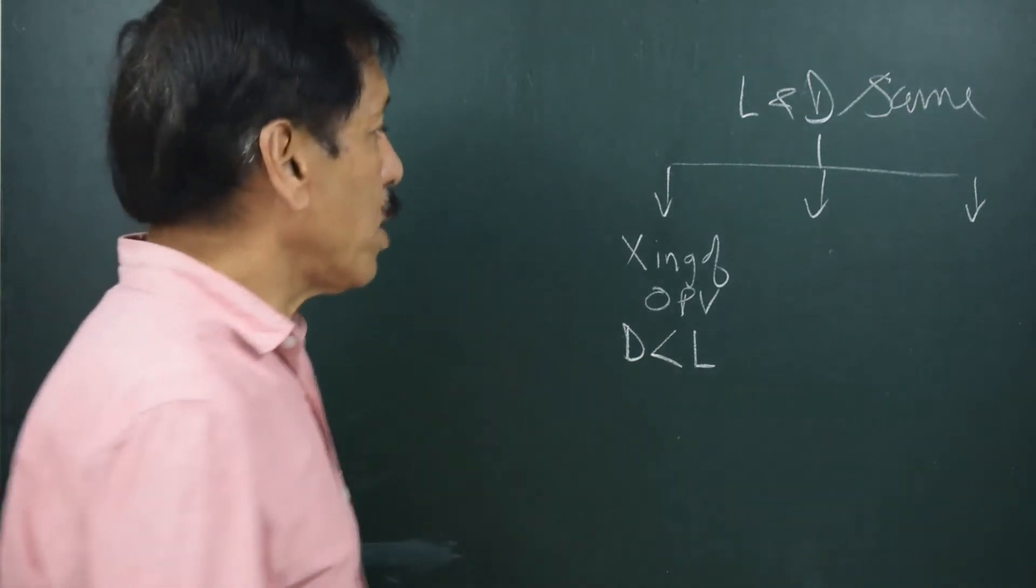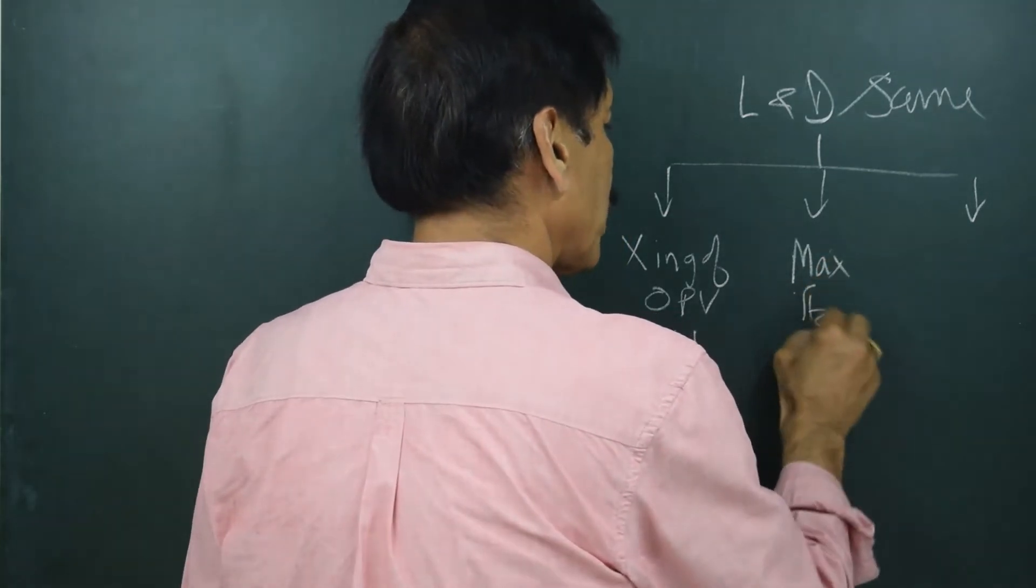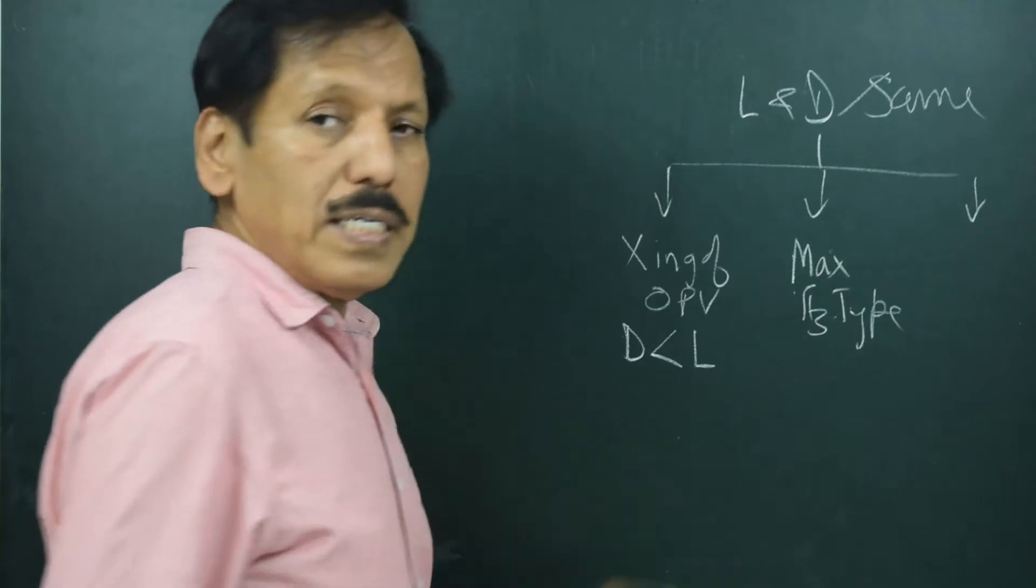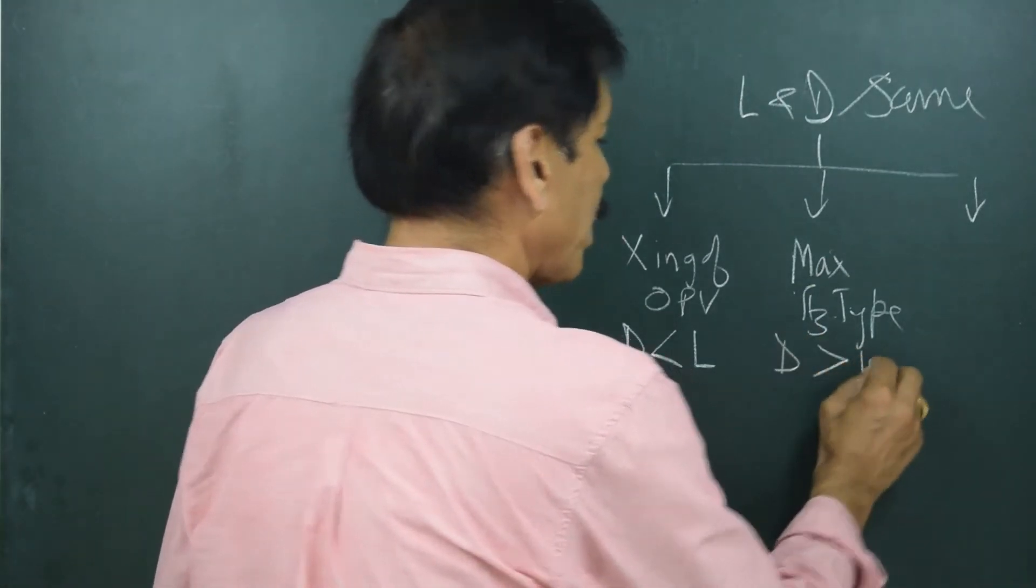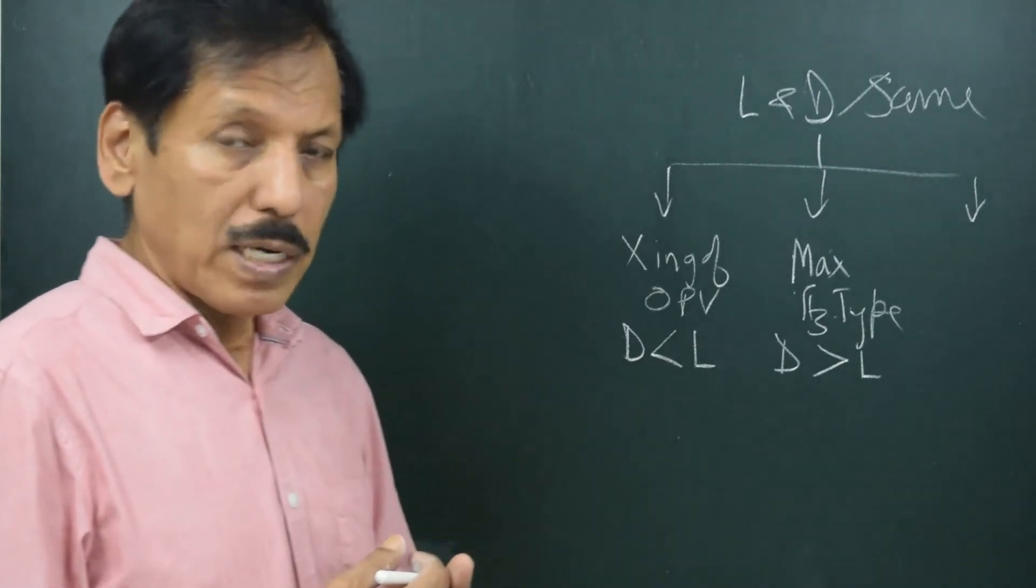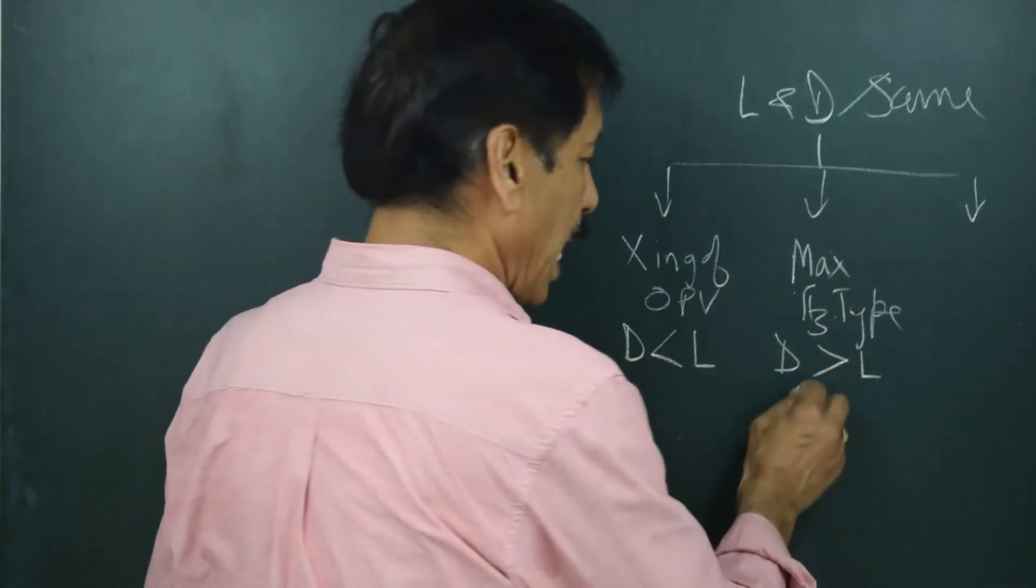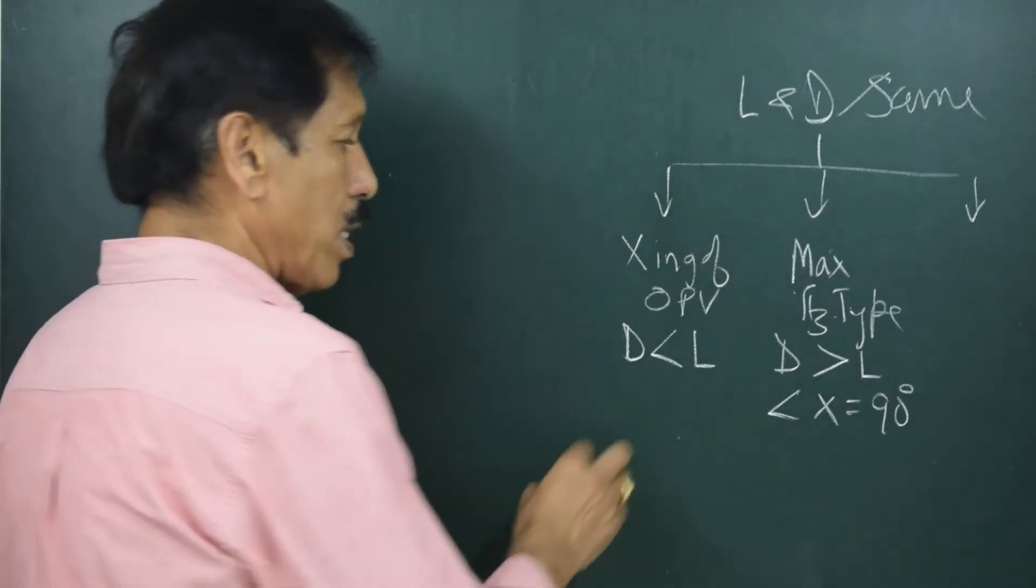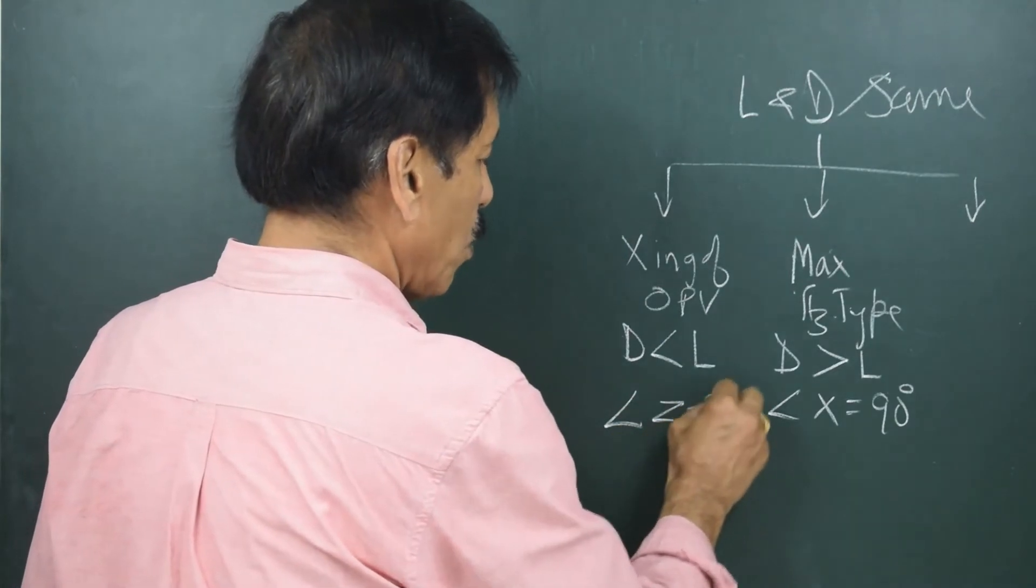There is another situation that is maximum azimuth type problem. So in these questions what happens is declination is more than latitude and what happens is the body does not cross observer's prime vertical. Typical in these kind of questions is angle x is equal to 90 degrees and in crossing of observer's prime vertical last time you must have seen that angle z is equal to 90 degrees.